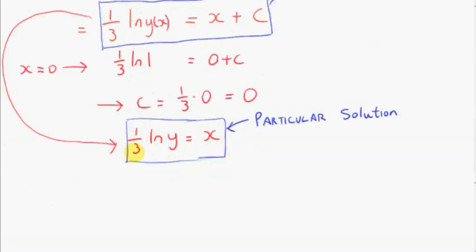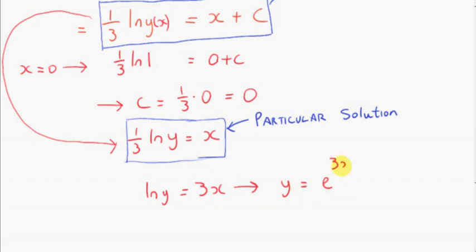We can make y the subject of this. So ln y equals 3x. Log to the base e of y is 3x, so y is equal to e to the power of 3x.